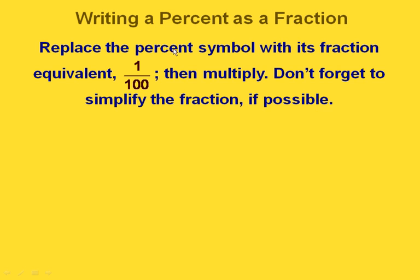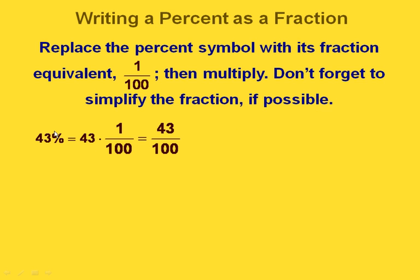Now what if we want to write a percent as a fraction instead of as a decimal? We can think about the fractional equivalent of 1%, which was one hundredth. We can do the same thing — just multiply by the fractional equivalent instead of the decimal. Once we're done with that, we do need to simplify the fraction if necessary. So if we start out with 43%, instead of using the decimal value of 1%, we're using the fractional value, so we have 43 times one hundredth.